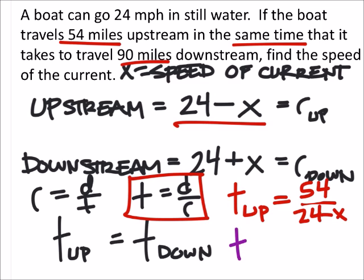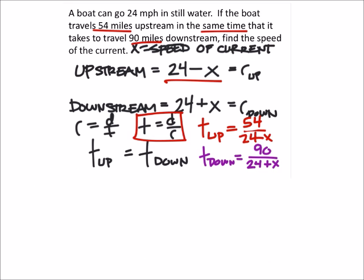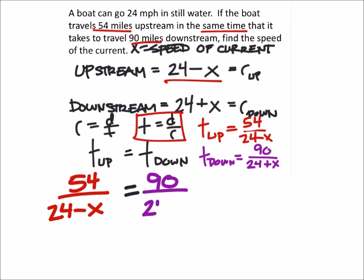Now let's look at the time for downstream, which is again the distance for downstream, which was 90, and then the rate for downstream was 24 miles per hour, but this time we added the stream speed. Remember, back here, we got the time upstream is the same as the time downstream. So I'm going to replace the time upstream with the expression we found, which was 54 over 24 minus x, and this should equal the same time it took to go downstream, which is 90 divided by 24 plus x.